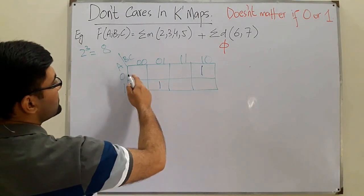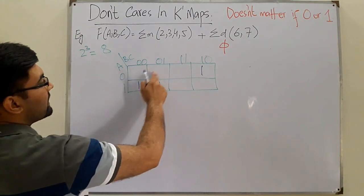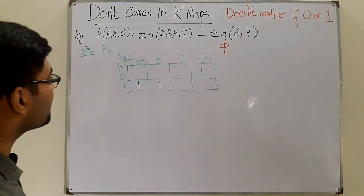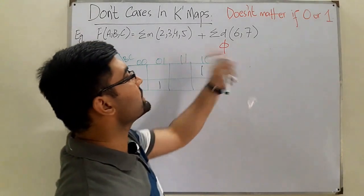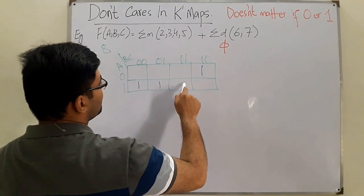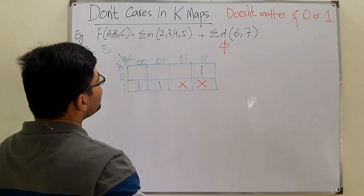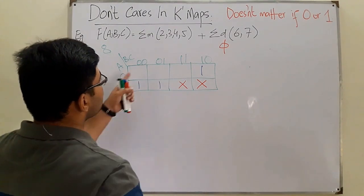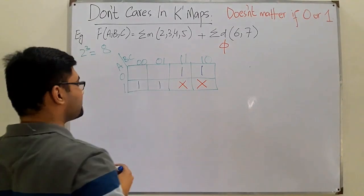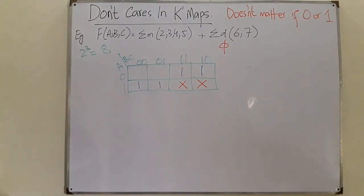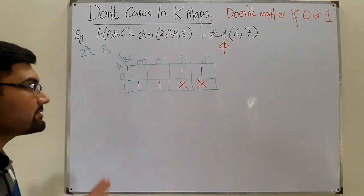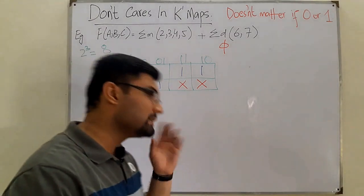Minterms 6 and 7 are these cells here. These are don't cares, so for don't cares we use the symbol cross (×). Minterms 2, 3, 4, and 5 are high (value 1), and minterms 6 and 7 get the cross symbol. This cross can be treated as a 1 if you need it as a 1, or treated as a 0 if you need it as a 0.